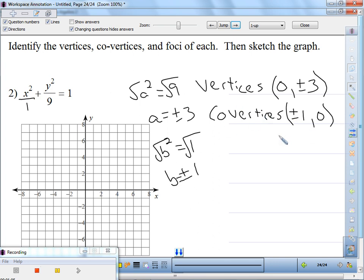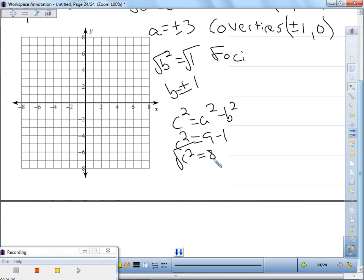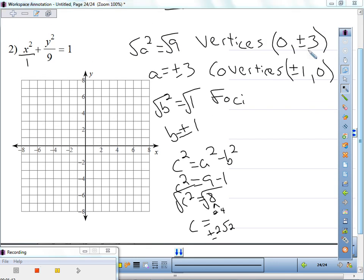We actually have enough to graph it, but since we were told to find it, we'll find the foci. We need to find c. C squared equals a squared minus b squared, so in this case that's 9 minus 1, giving us c squared equals 8. Taking the square root of both sides, it's not a perfect square, so I'll break it apart. I can take out a 2, so it's 2 square root of 2, or plus or minus 2√2. It'll be in the same direction as the vertices, so our foci are at (0, ±2√2).